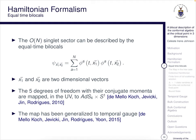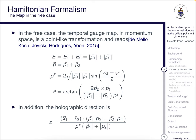Let's have a look at the Hamiltonian formalism. First, equal time bilocals. The O(N) singlet sector can be described by the equal time bilocals given over there, where x1 and x2 are two-dimensional vectors. The expression for psi has five degrees of freedom, and their conjugate momenta are mapped in the UV to AdS4 cross S1, so the five degrees of freedom match on either side. This map has been generalized to the temporal gauge in the 2015 paper by those authors.